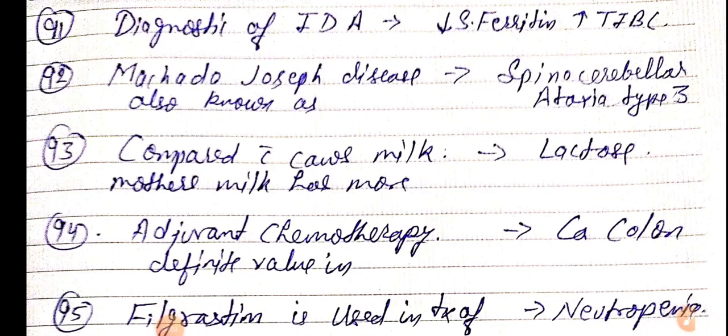Good morning doctors, welcome again. Today we are going to discuss NEET PG 2021 important one-liners, this is part 10. Diagnostic of IDA, iron deficiency anemia, is mainly by decreased serum ferritin and increased TIBC, or transferrin saturation, or total iron binding capacity. The best marker for iron deficiency anemia is serum ferritin.